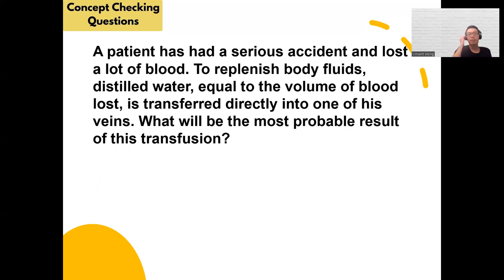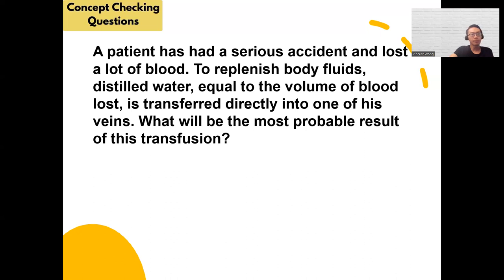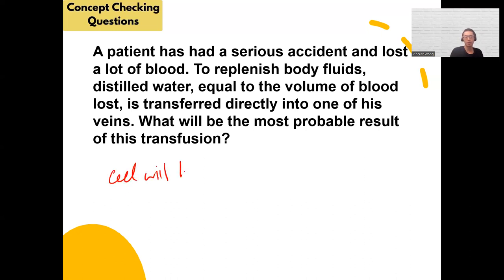A patient has had a serious accident and lost a lot of blood. To replenish body fluids, distilled water equal to the volume of blood loss is transferred directly into a vein. What will be the most probable result? Distilled water is just water with nothing in it — that's hypotonic. If you give hypotonic solution, the blood is diluted, cells will swell and burst. This is not safe. You should give isotonic normal saline instead.